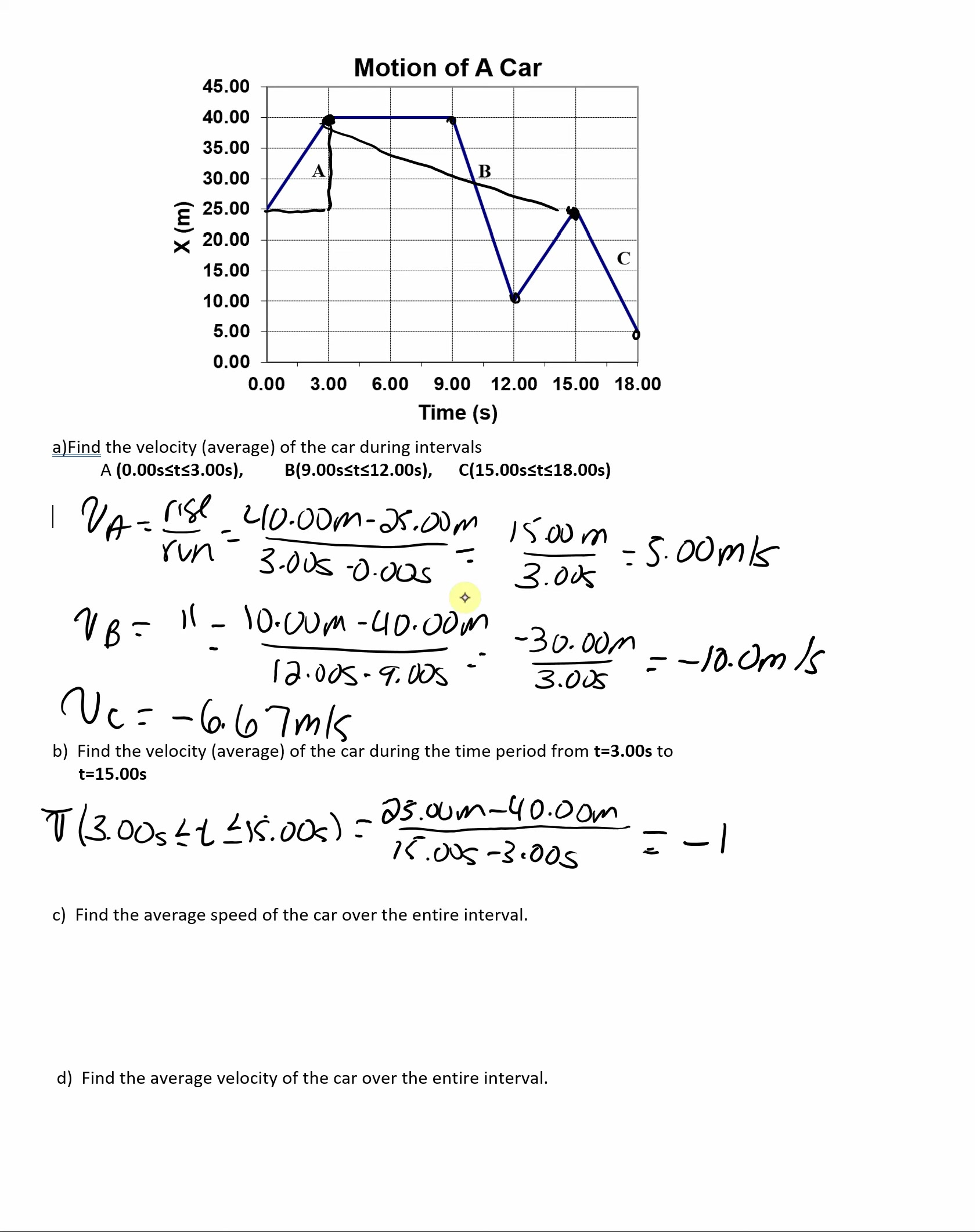Which is negative 15 meters over 12 seconds, or negative 1.25 meters per second. Once again, it makes sense, because we have a negative slope.